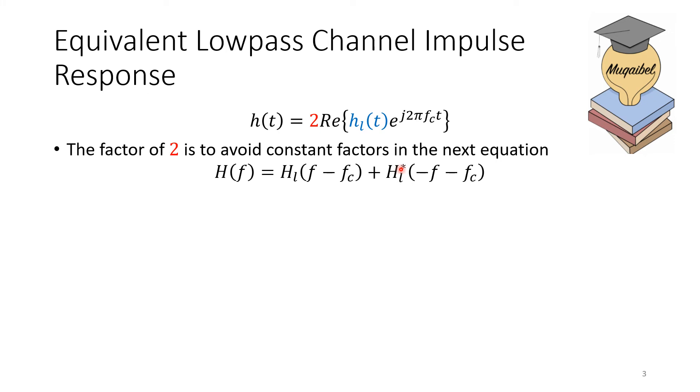What we do is say that the transfer function of the channel is related to its lowpass equivalent by shifting by two shifts, and this is the complex conjugate. We can show this using Fourier transform properties. The received signal will be the real part of the signal convolved with the lowpass equivalent. We can do the operation in lowpass and then shift into the frequency of interest.